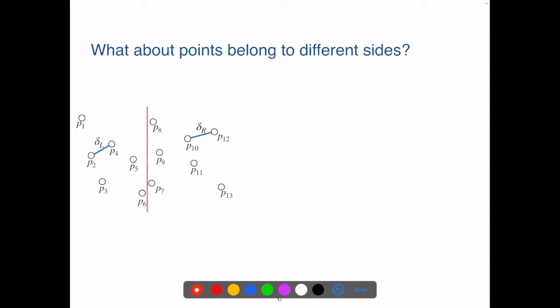So we missed some tricky cases. What if the closest pair of points are on opposite sides of the dividing line?